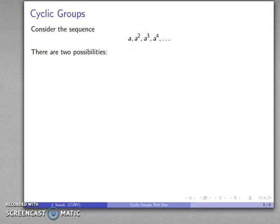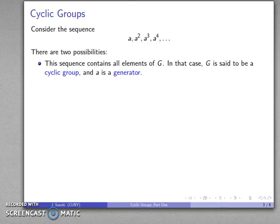Remember, all of these are elements of some group, and so one possibility is this sequence contains all elements of G, of our group. In that case, G is said to be a cyclic group, and A is a generator. A generates all elements of G, and there's a cyclic nature to it that we'll talk about in a moment.